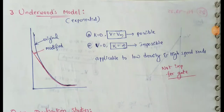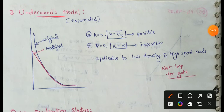Next topic: Underwood's Model. This Underwood's Model is one of the traffic stream models. Underwood's Model is an Exponential Model, also called the Underwood's Exponential Model. This Underwood's Model is a correlation between density and speed.